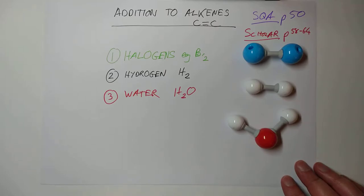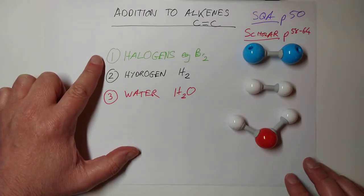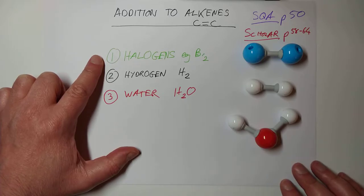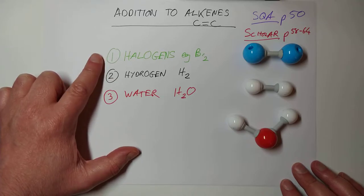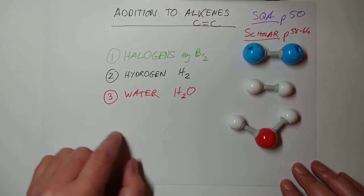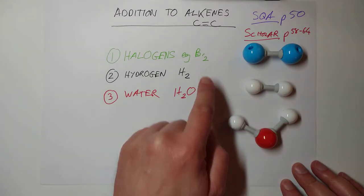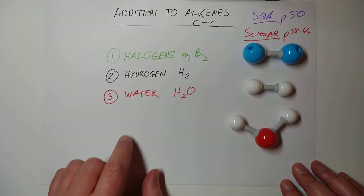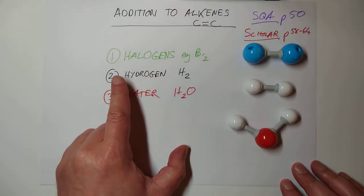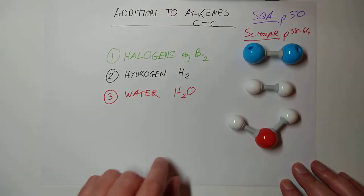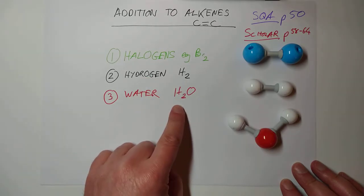The three things that we are going to add to these alkenes are a member of the halogen family. If you're not sure which group on the periodic table that is, feel free to pause the video and go and look it up. So the halogens, the example we're going with here is bromine. Please remember that bromine is one of our diatomics, all of the halogens, in fact, are diatomics. You can also add hydrogen gas, H2. And lastly, you can add water on, believe it or not.